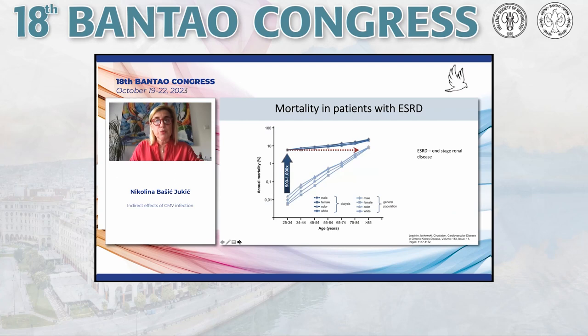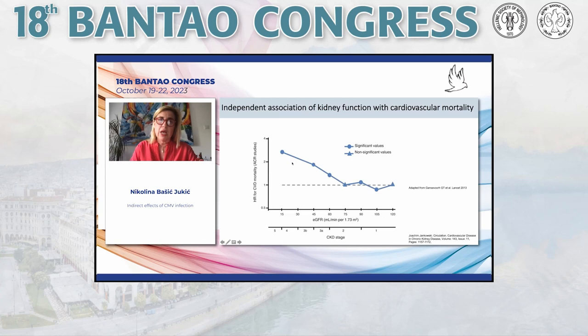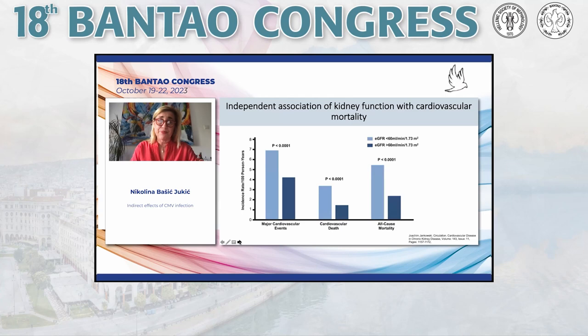When we look at mortality in patients with end-stage renal disease, it is much higher than in the general population. The mortality risk of very young patients with end-stage kidney failure equals the risk of an elderly person from the general population. We know that with a decrease in glomerular filtration rate, we have an increase in the risk of cardiovascular mortality.